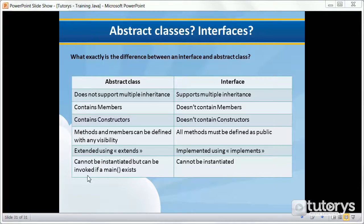To best answer that question, let's first look at this table which compares the two. An abstract class does not support multiple inheritance, whereas an interface does. An abstract class contains members, whereas an interface doesn't. An abstract class contains constructors, whereas an interface doesn't.